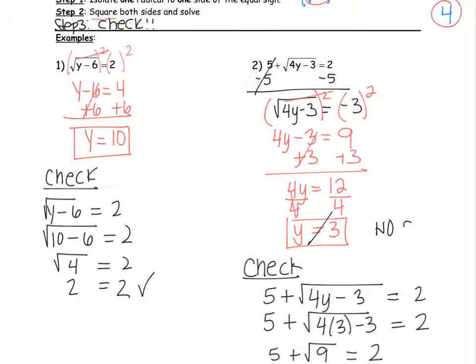So there is no solution. That's why a check is so important. We're rejecting y equals 3 and writing no solution, because it does not work.